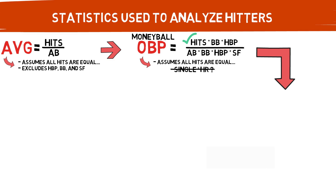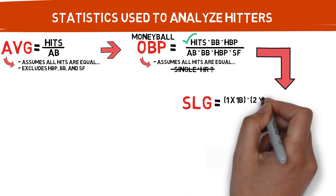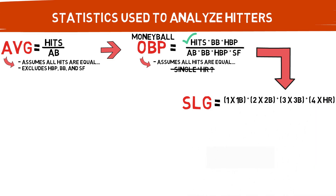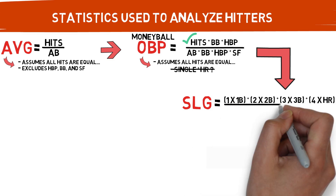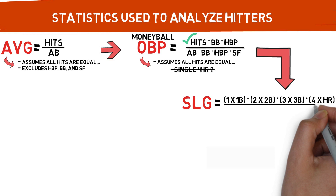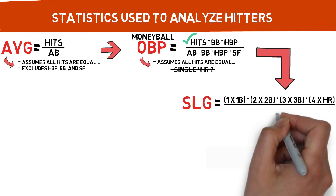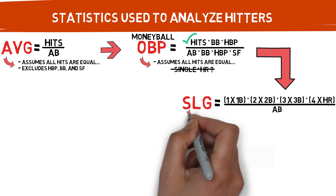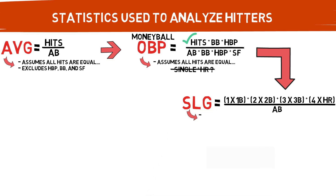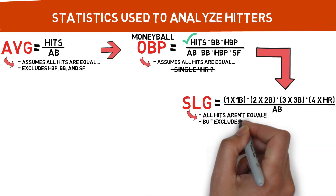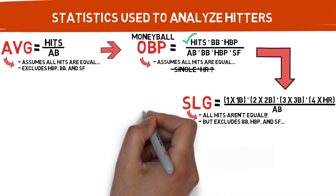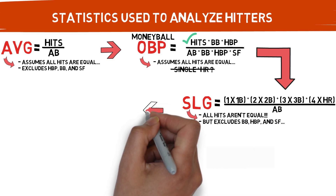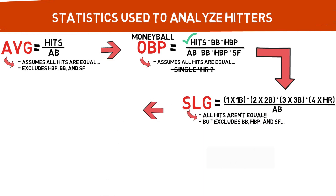So to solve our all-hits-aren't-equal issue, we turn to slugging percentage. It's a simple equation that weights each different type of hit and combines them into an easy-to-read way. Doubles are twice as valuable as a single, triples three times, and home runs four times. Finally, a statistic that takes into account that all hits aren't equal. But now we have the issue of leaving out our alternative ways to find ourselves on the base paths, such as walks and hit-by-pitches. Back to the drawing board.